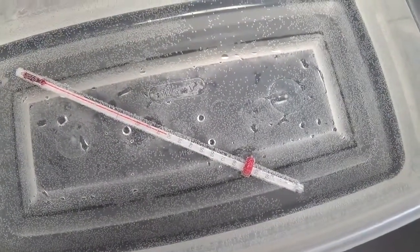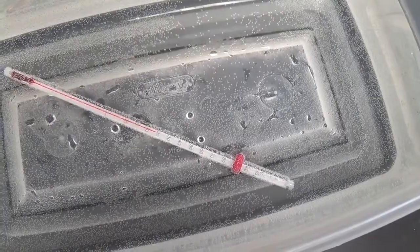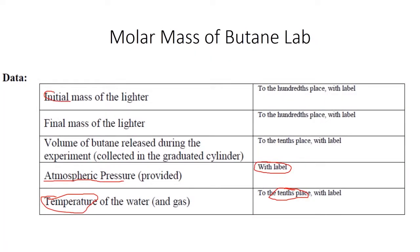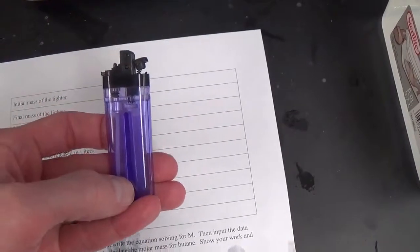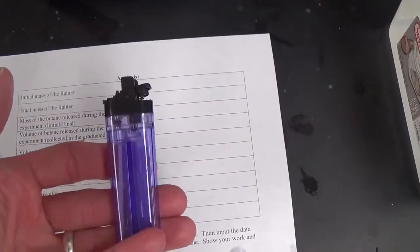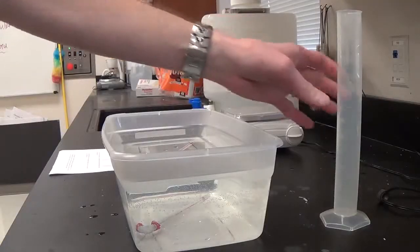The thermometer is in the water so that you can get the water temperature. Remember to read between the lines. We also need the initial mass of the lighter. You have to start that before you put the lighter in the water. Make sure that the lighter is completely dry. Blow on it and everything to make sure.